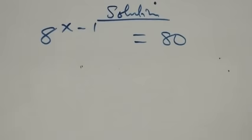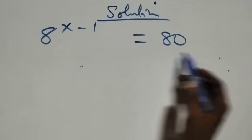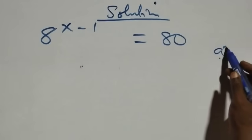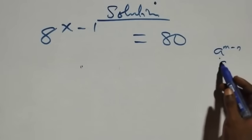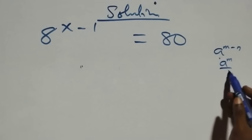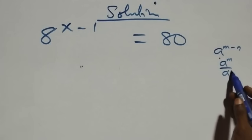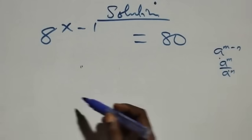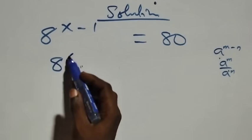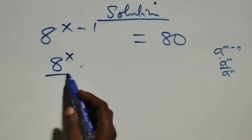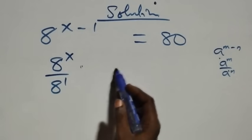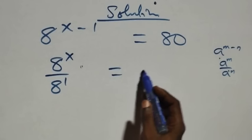On this side, what we have follows: when we have a raised to power m minus n, this is the same thing as a raised to power m over a raised to power n. So this here becomes 8 raised to power x over 8 raised to power 1, equals to 80.